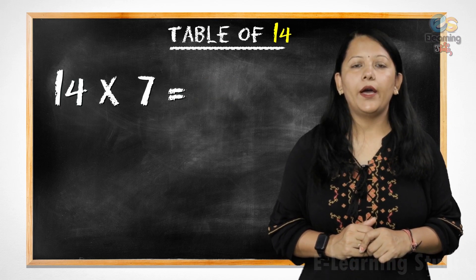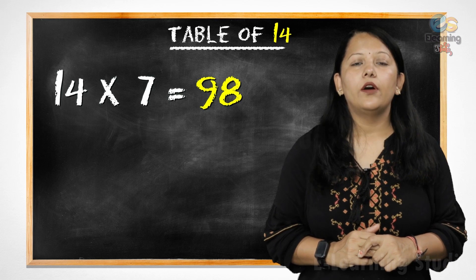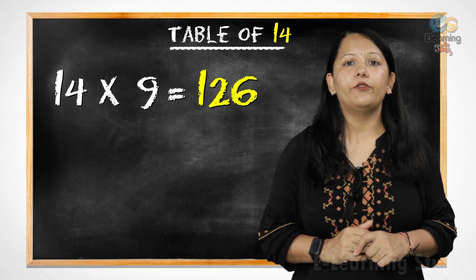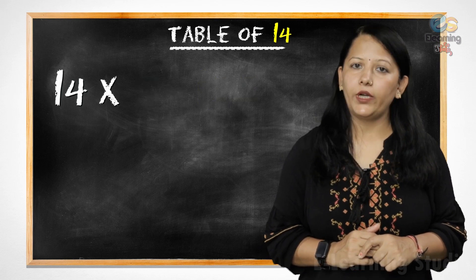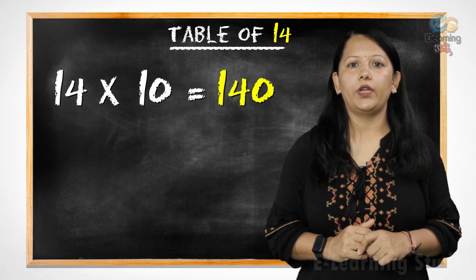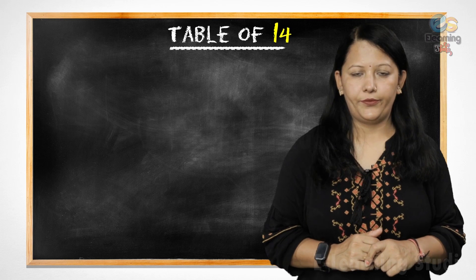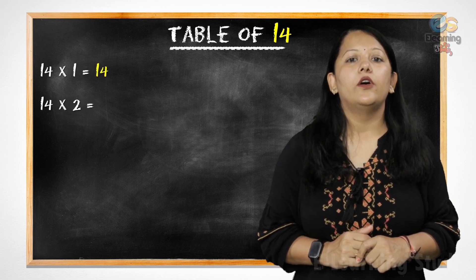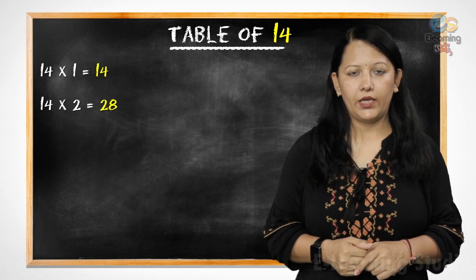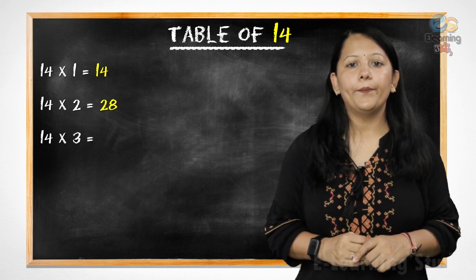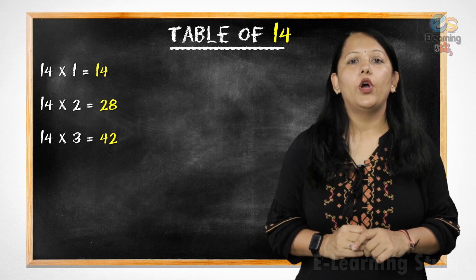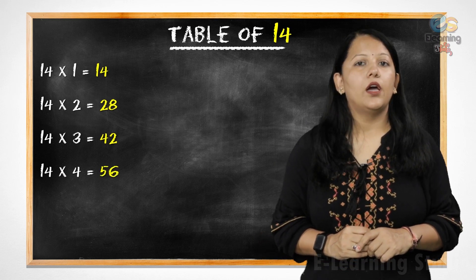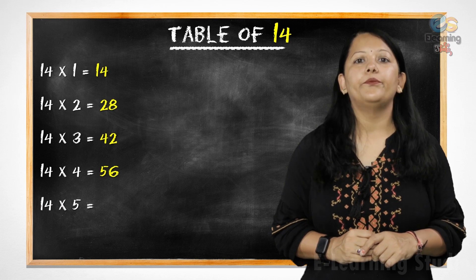14 sevens are 98, 14 eights are 112, 14 nines are 126, 14 tens are 140. Now let's revise it. 14 ones are 14, 14 twos are 28, 14 threes are 42, 14 fours are 56, 14 fives are 70.